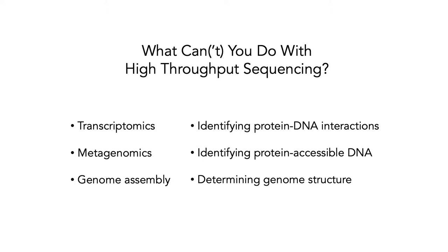You've probably already encountered topics like transcriptomics to figure out gene expression, metagenomics to find out the range of organisms that live in a particular environment, and genome assembly to get a genome sequence from sequence data. But there are all these other uses too — things like identifying DNA-protein interactions, identifying protein-accessible DNA, and determining genome structure, which you might not first think of next-generation sequencing as being well suited for.